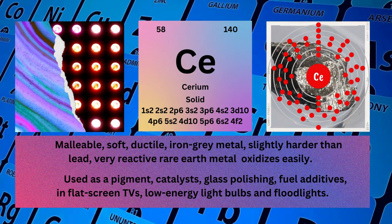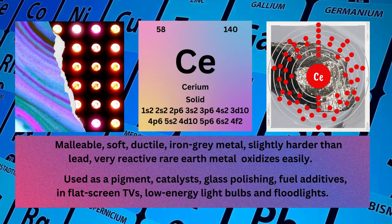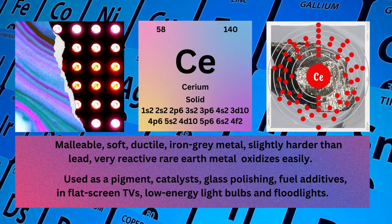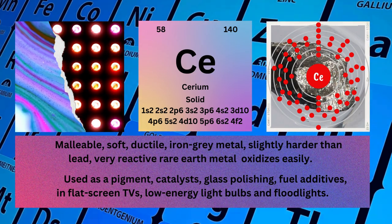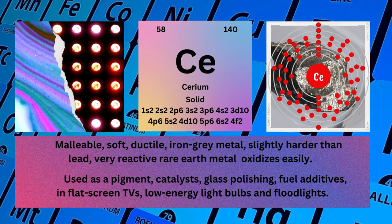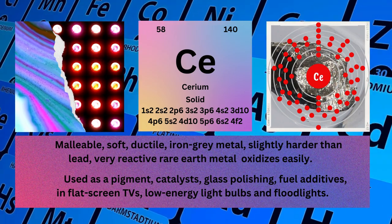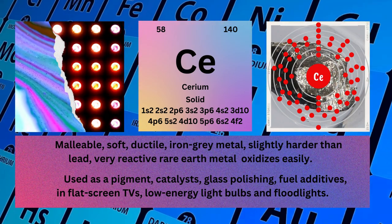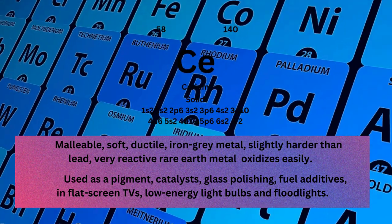Cerium is used as a pigment, catalysts, glass polishing, fuel additives, in flat-screen TVs, low-energy light bulbs and floodlights.